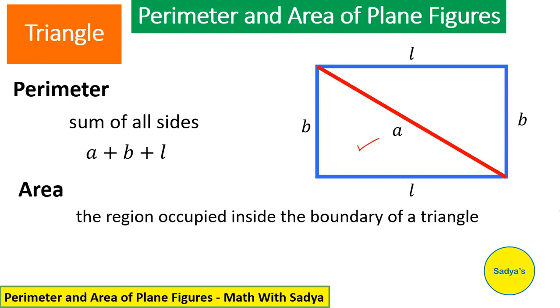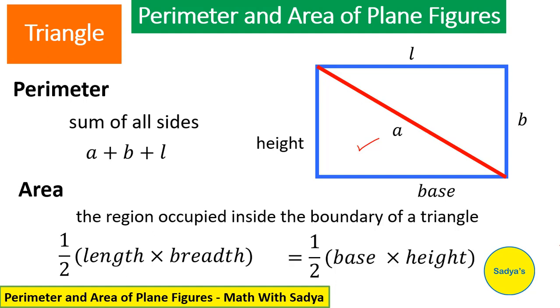Area of the triangle means the region occupied inside the boundary of the triangle. All this portion inside the triangle makes up the area of a triangle. Can you suggest what would be the area of the triangle? Yes. It would be half of the area of a rectangle. Area of triangle is equal to half length into breadth. For triangle, we don't use the words length and breadth. Instead, for length, we use the word base. And for breadth, we use the word height. So, area of triangle is equal to half base into height.